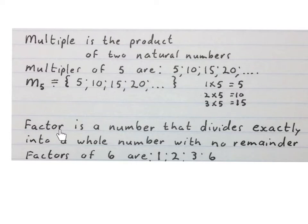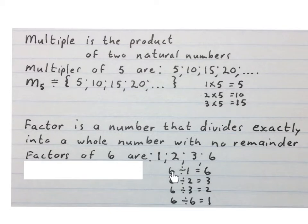A factor is a number that divides exactly into a whole number with no remainder. For example, the factors of 6 are 1, 2, 3 and 6. They can divide into 6 without a remainder. 6 divided by 1 is 6, 6 divided by 2 is 3, 6 divided by 3 is 2 and 6 divided by 6 is 1.